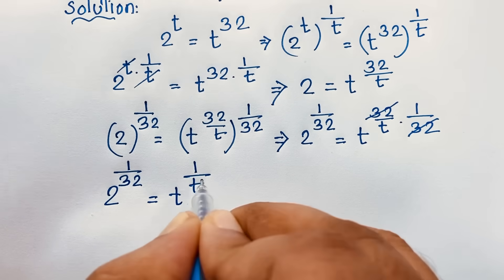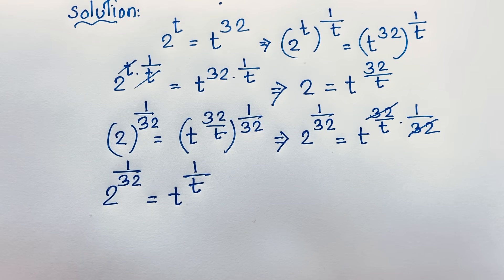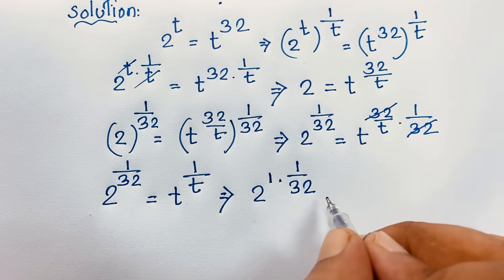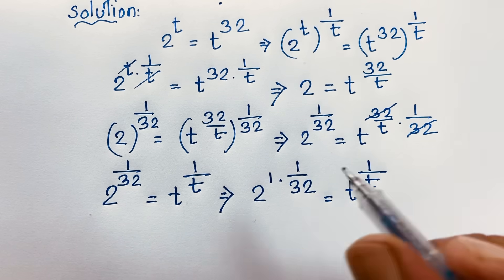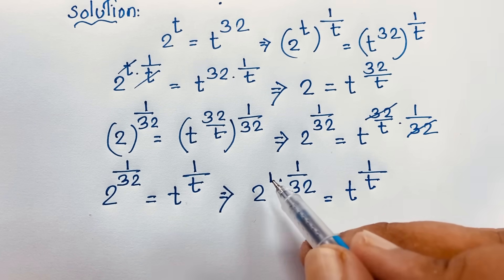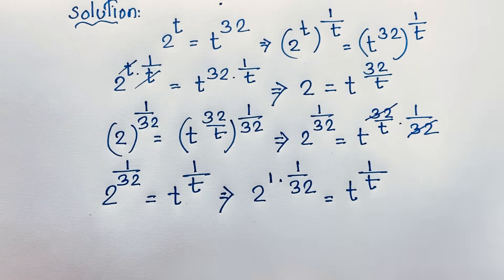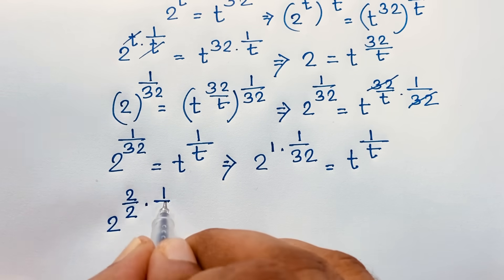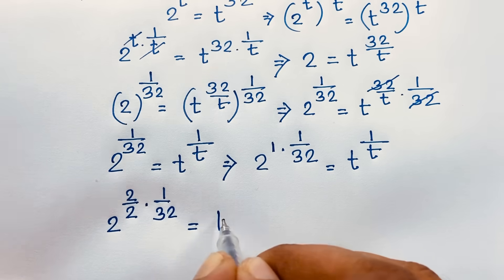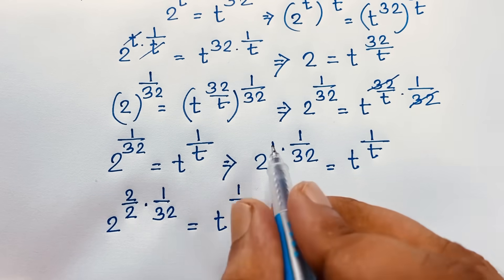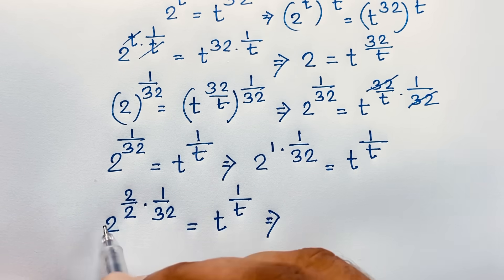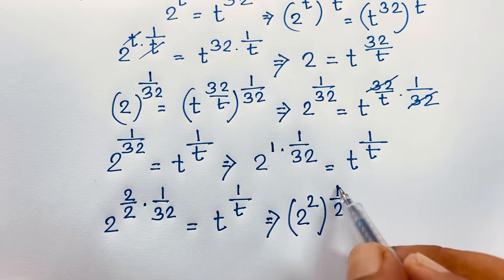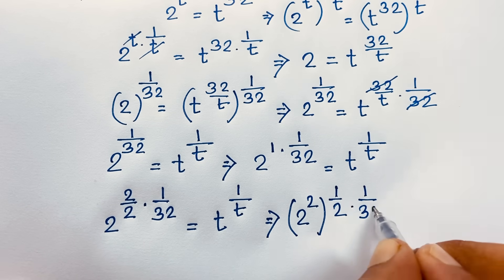Now I rewrite 2 to the power 1 over 32 in an equivalent form. I express 2 as 2 over 2 in the exponent. So we have 2 to the power 2, raised to the power 1 over 2, with an overall exponent of 1 over 32. This gives 2 times 1 over 2 in the exponent, which is 2 over 2 equals 1, multiplied by 1 over 32.